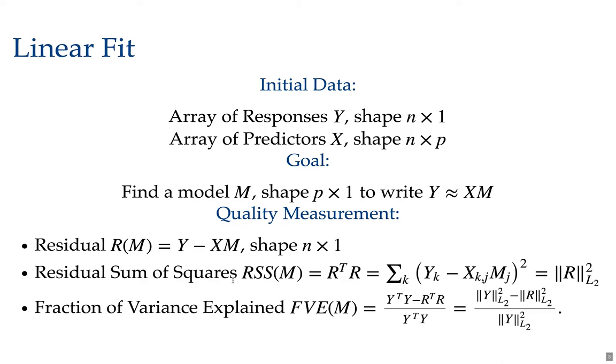The fraction of variance explained is a quantity derived from the residual sum of squares, where a value of 1 means that all of your data is explained perfectly by the model. There's zero residual, and all the variance of the response y is accounted for. A fraction of variance explained of 0 means effectively that your model is worthless. It explains none of the variation of your response variable y. The classic case of a model which explains zero of the variance would be the zero model.